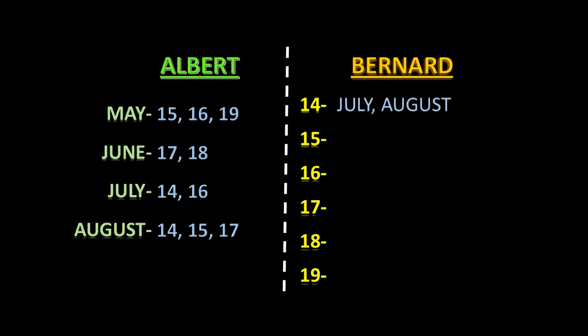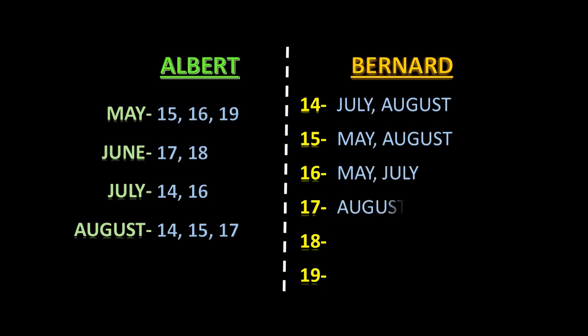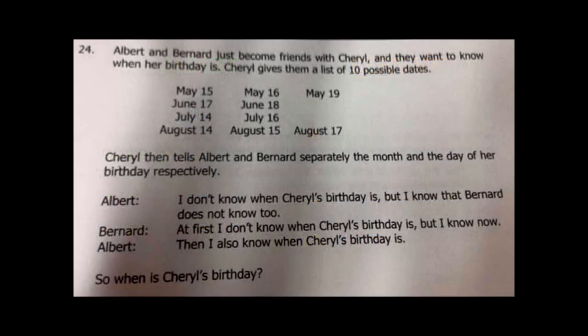As for Bernard: 14th is present in July and August; 15th is present in May and August; 16th is present in May and July; 17th is present in August and June; 18th is placed in June; and 19th is placed in May. Pardon the jumbling of the order of 17th for Bernard, but you can understand what it means.